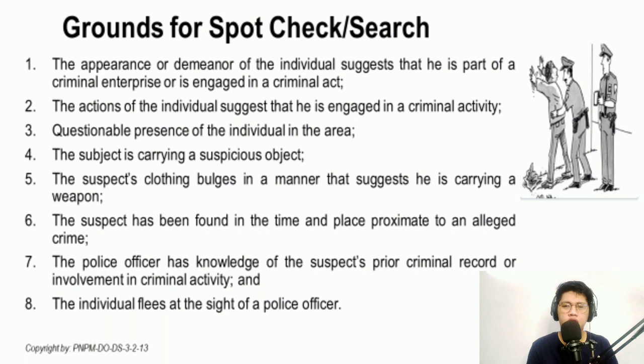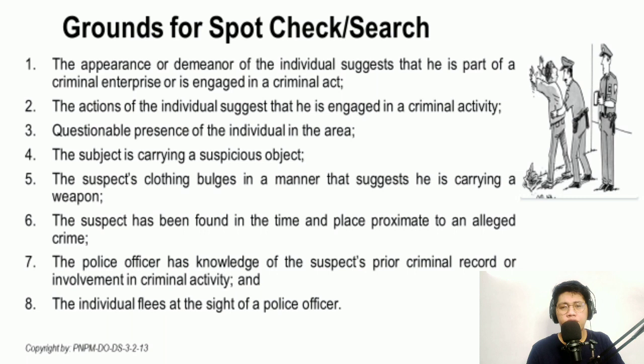The fourth circumstance is when the person is carrying a suspicious object — for example, drugs concealed in items, or a firearm concealed in his body or belongings. If you have reasonable suspicion that the person is carrying illegal contraband, you can justify stopping that person, inquiring about their identity, and even conducting a search without the benefit of a search warrant.